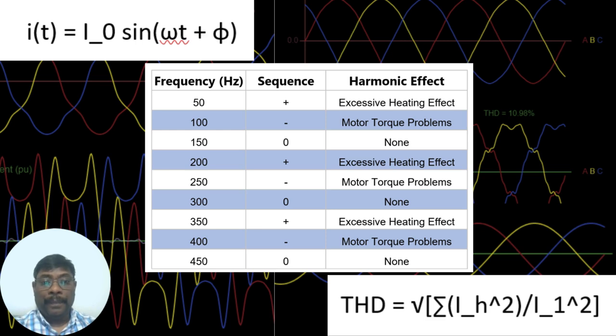Negative sequence harmonics produce torque problems for the rotating machines. Zero sequence creates the unbalanced circuit, unbalanced current flow in the circuit.